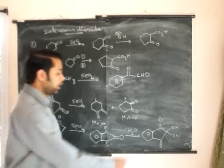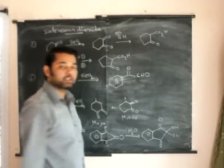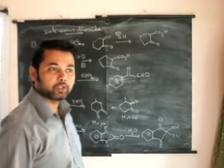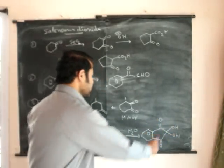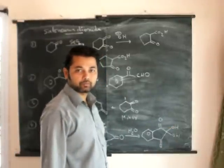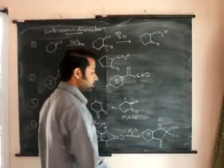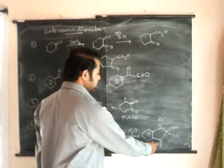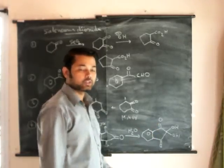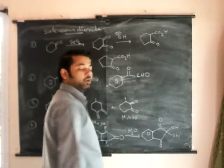Generally, two hydroxy groups on one carbon make an unstable compound. It will immediately lose one molecule of water and exist in the keto form. But here, because of two electron-withdrawing groups, this compound is stable in the geminal diol form.